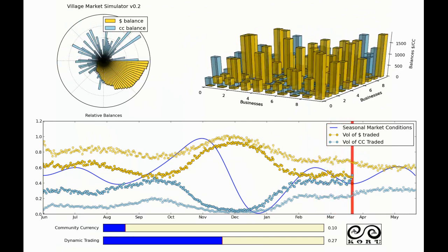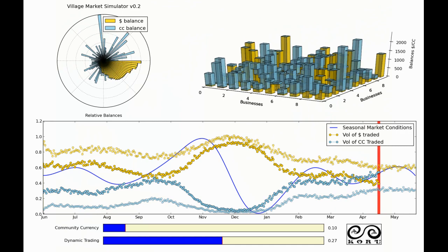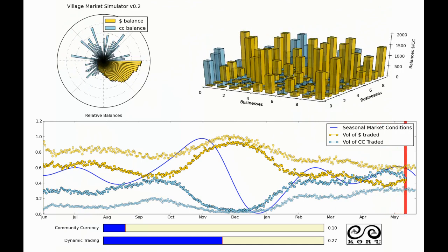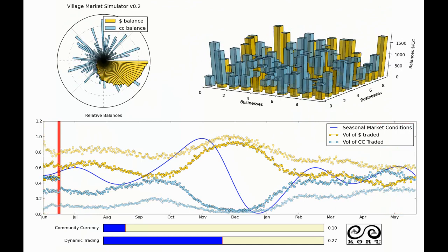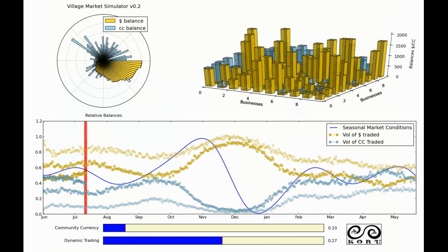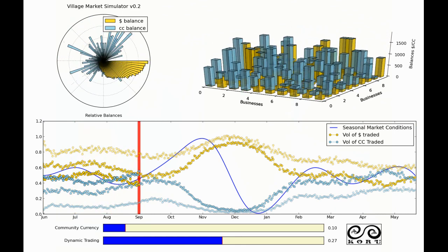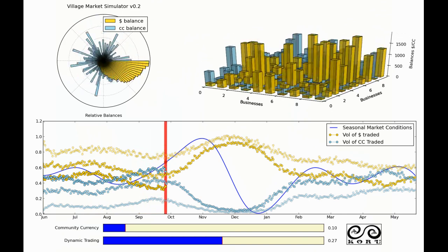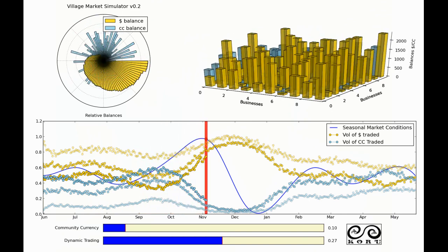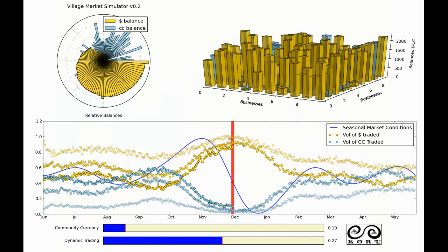And as time goes on there's less and less of the national currency in the system because it's leaking out. The complementary currency or community currency begins to really stabilize the community when it's in these periods where they're not able to export their goods or services.